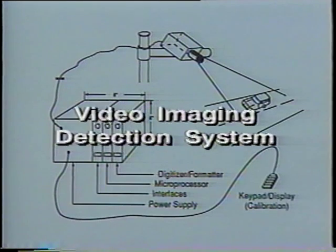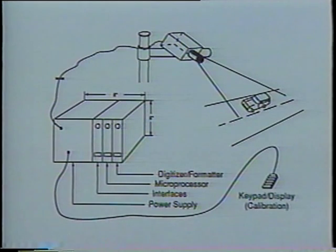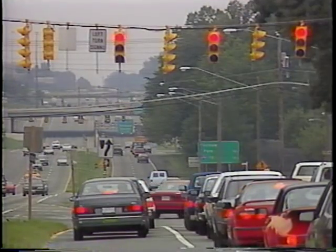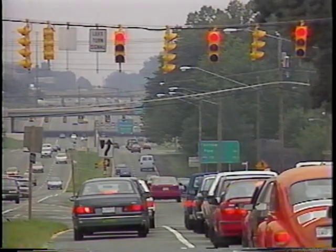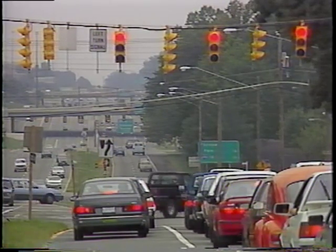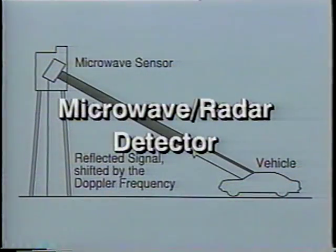Two SPVDs placed a predetermined distance apart can also measure speed. Another promising emerging detector technology is the video detection system, called VIDS for short. It uses a single video camera with processing hardware and software to provide data similar to that of multiple loop detectors. VIDS can detect traffic at multiple spots within the camera's field of vision; detection lines across traffic lanes are inserted on the screen using a keyboard, and every time a vehicle crosses a detection line, a detection signal is generated. Data is extracted on occupancy, volume, queue lengths, and speed.